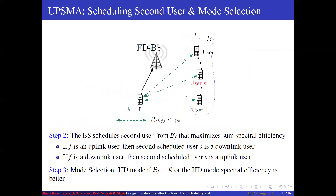Now the base station has to select the second user for the reverse link from the feedback indices. It can compute the sum spectral efficiency when the first user is F for all pairs of user F and the users present in the set, and schedules the second user maximizing sum spectral efficiency. If the first scheduled user is the uplink user, then the base station selects the downlink user from the feedback set; if the first user is the downlink user, then the base station schedules the second user on the uplink. The base station selects half duplex mode if the feedback set is empty, or if half duplex mode gives better spectral efficiency compared to full duplex mode.